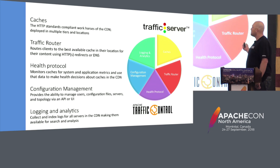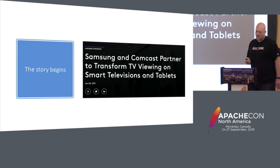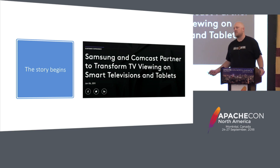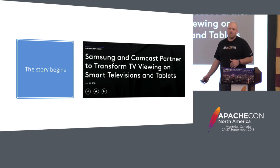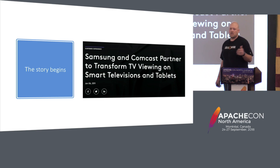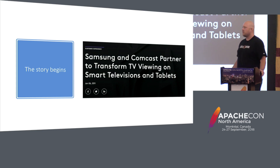Before I go too far into Traffic Control, I want to start with where our story begins. The whole reason we started out this way is because in 2011, Comcast announced a partnership with Samsung TVs to bring TV to Samsung devices — tablets, TVs, et cetera. That was different from what Comcast had been doing. We were delivering video over QAM using broadcast, and now we were going to IP using Unicast UDP or TCP. We had to figure out how we were going to do this, and we quickly realized we needed a CDN.